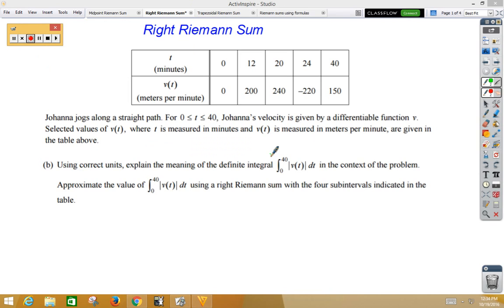Thank you for reading the question. The topic is Joanna jogging along a straight path from 0 to 40 in time minutes, going in meters per minute. If we skip down to part B, using correct units, explain the meaning of the definite integral from 0 to 40 of the absolute value of V of t dt. Well, when you see the absolute value bars, that means total distance traveled, as opposed to net distance traveled. And the time frame is from 0 to 40, so that's over the first 40 minutes. So, we would explain that it is the total distance traveled by Joanna jogging during the first 40 minutes in meters.